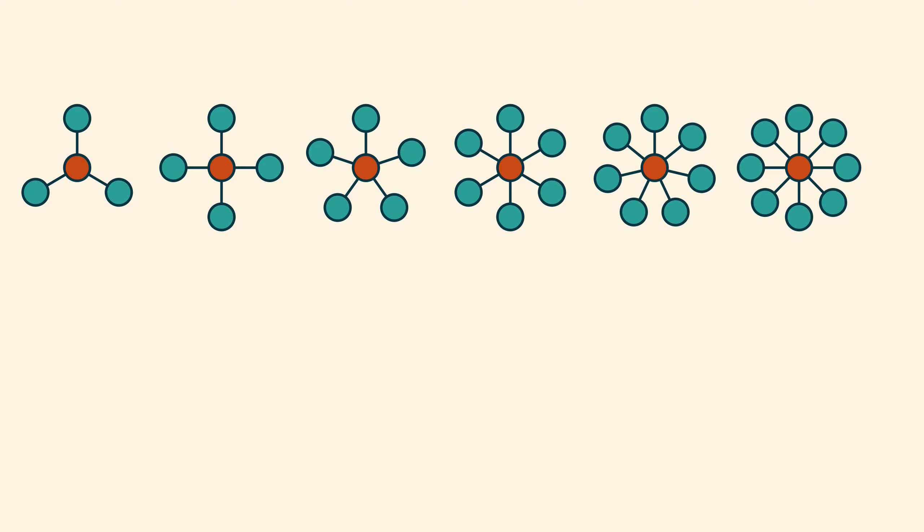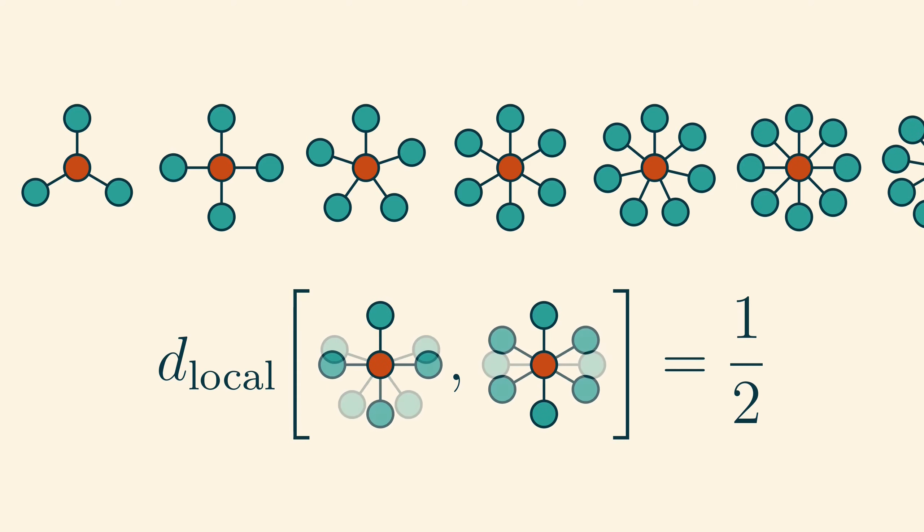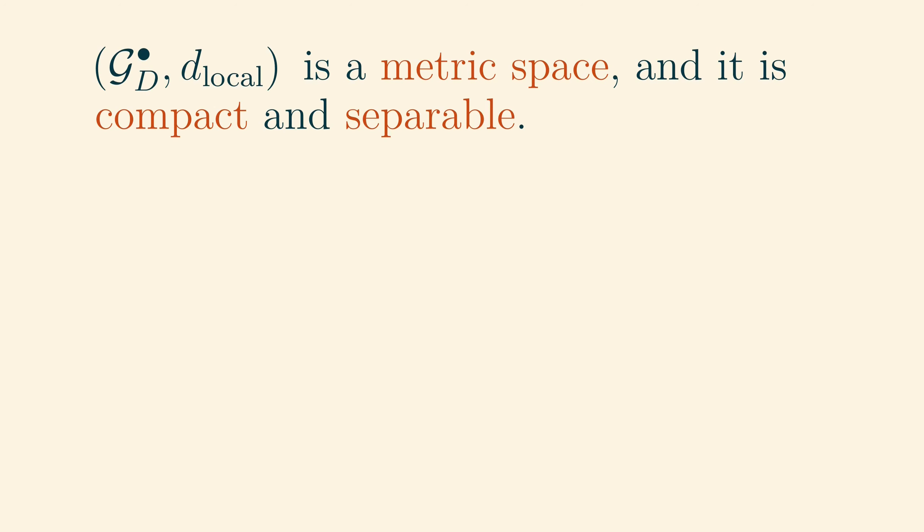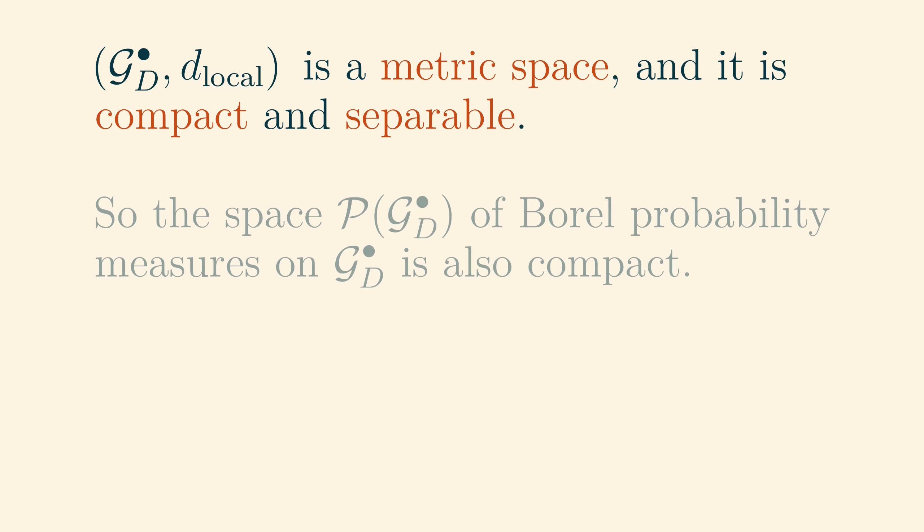If we look at the sequence of star graphs, which does not have uniformly bounded maximum degree, we notice that every graph in the sequence is a distance half from every other graph in the sequence. Thus, the sequence of star graphs cannot have a convergent subsequence in the local metric we have defined on rooted graphs.